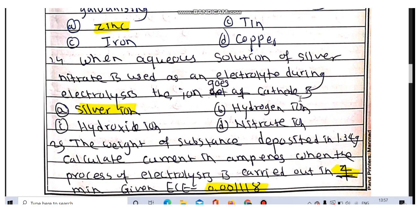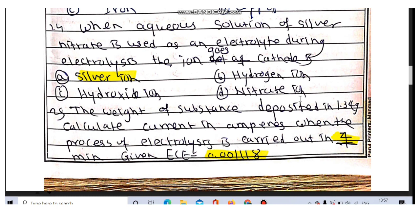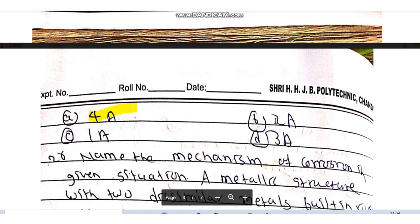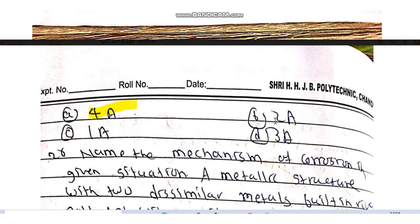Generally metal ions go to cathode. The weight of substance deposited is 1.34 grams. Calculate current in amperes when the process of electrolysis is carried out in 4 minutes. Given ECE, that is Z, is 0.001118. You have to calculate the weight. The answer is 4 amperes, it is the current.